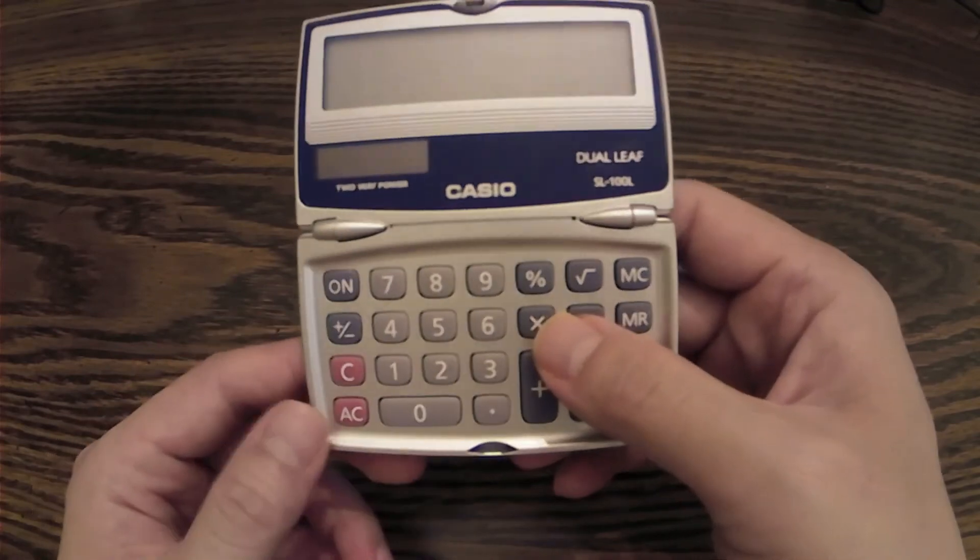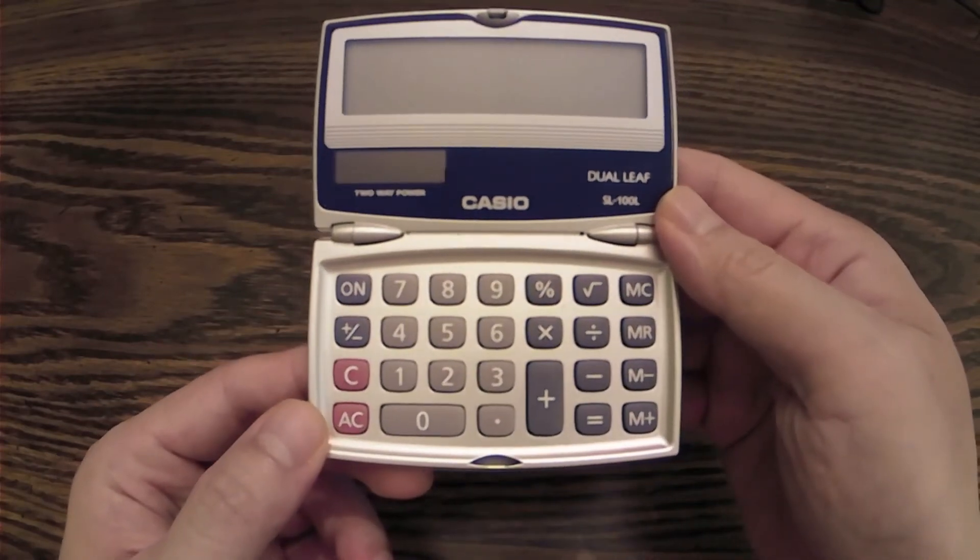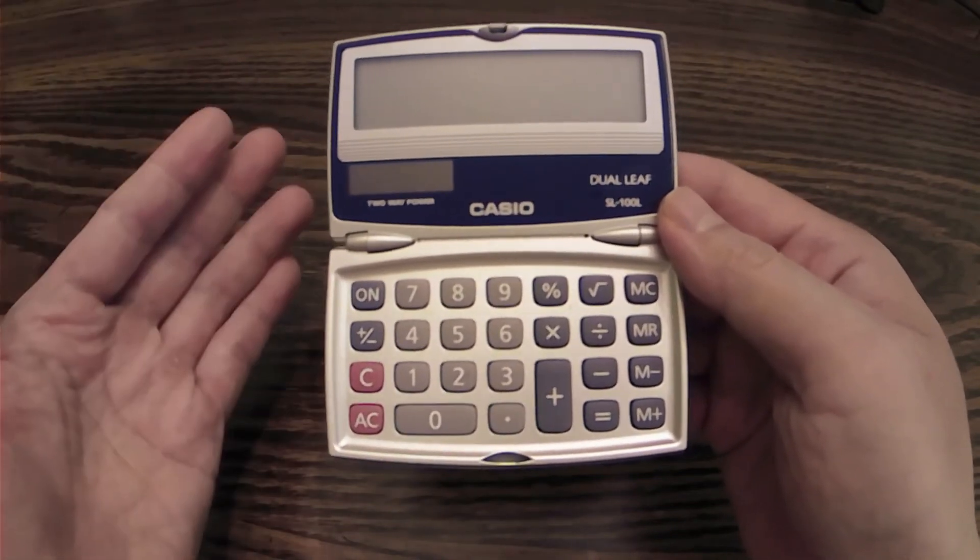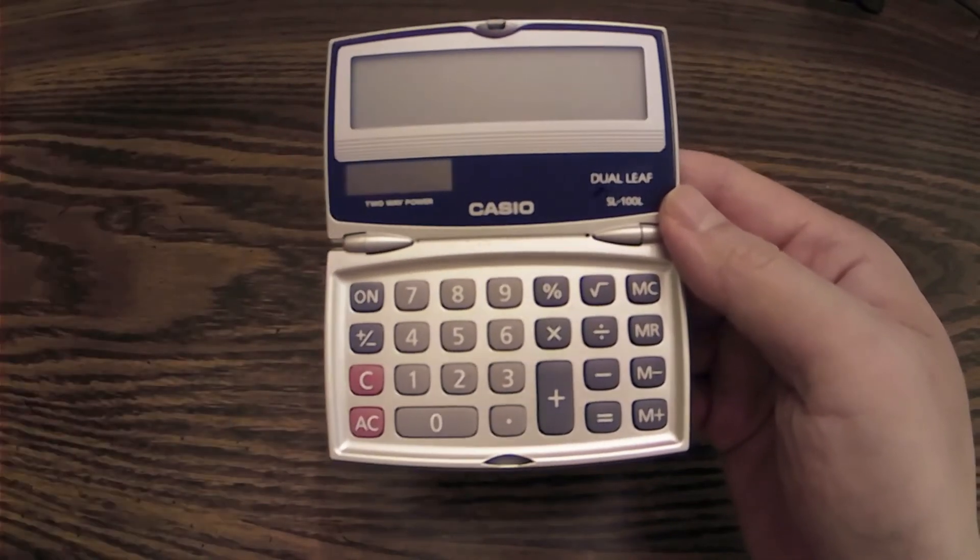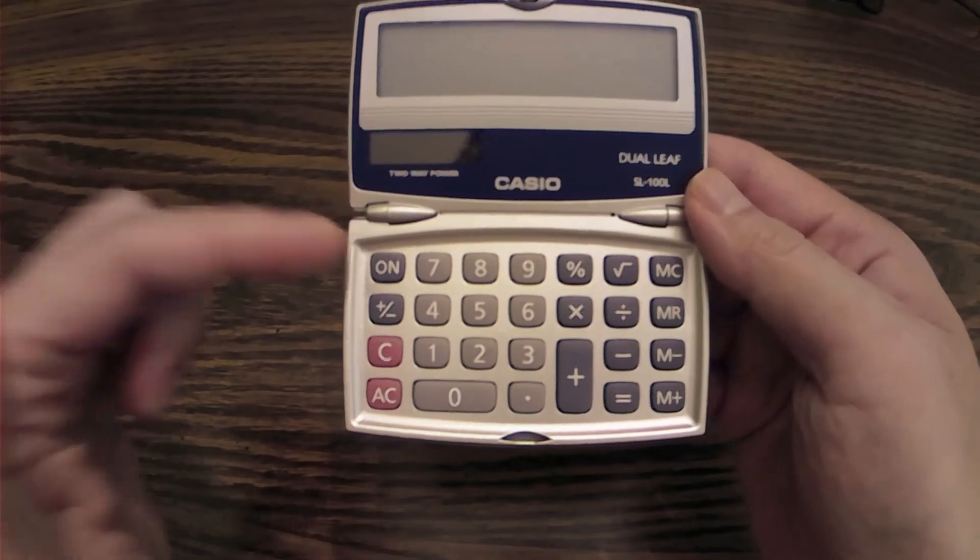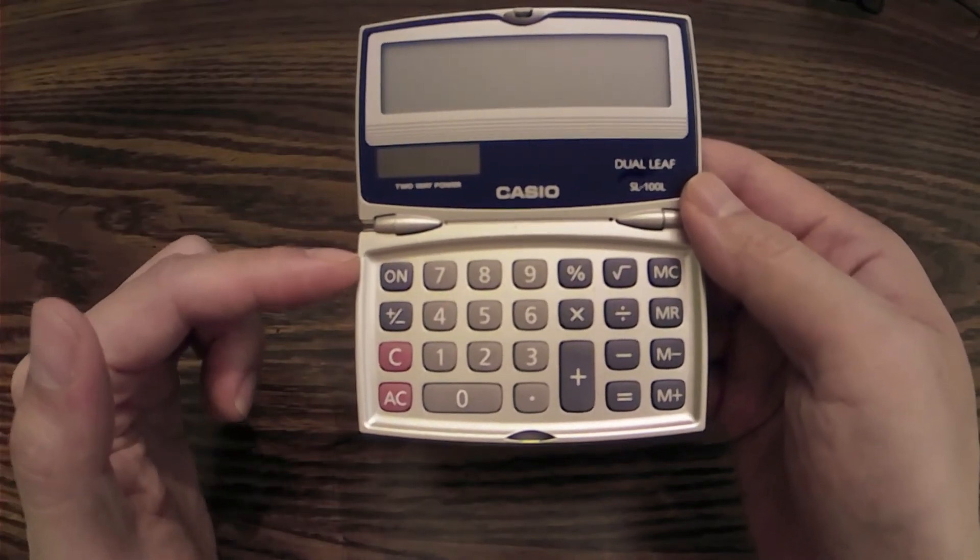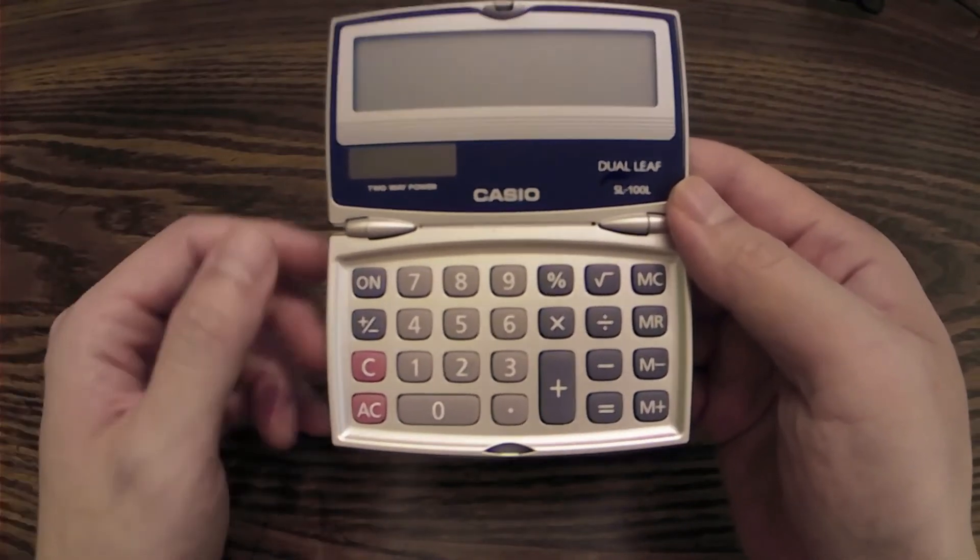And it shuts the calculator off. So there actually is a way to turn this calculator off, but still, it would be so much easier if they just put an off button here instead of having two ON buttons. It just doesn't make sense.